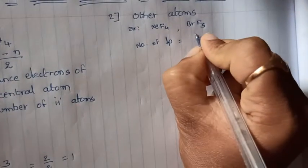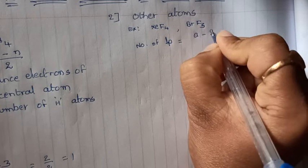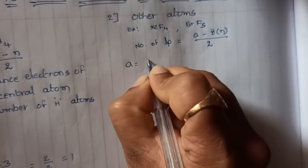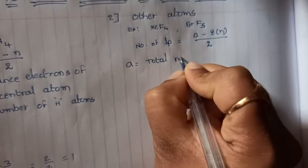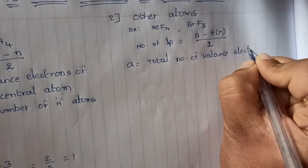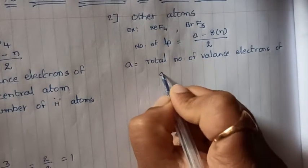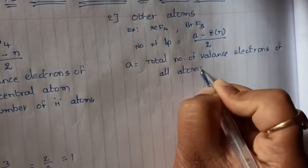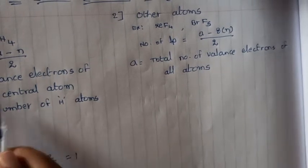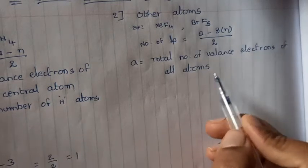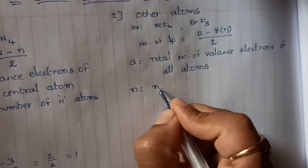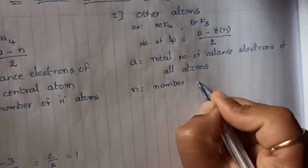In this case, the formula is: number of lone pairs equals (A minus 8 times N) divided by 2. Here A is the total number of valence electrons of all atoms — you need to consider all atoms' valence electrons, not just the central atom. That's the key difference from Case 1. And N is the number of surrounding atoms, i.e., atoms other than the central atom.